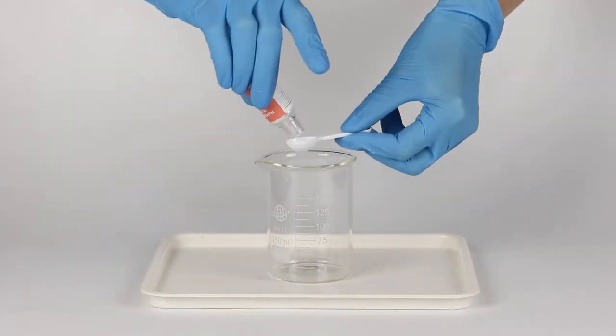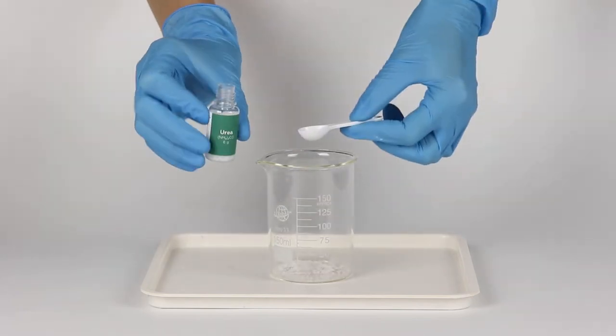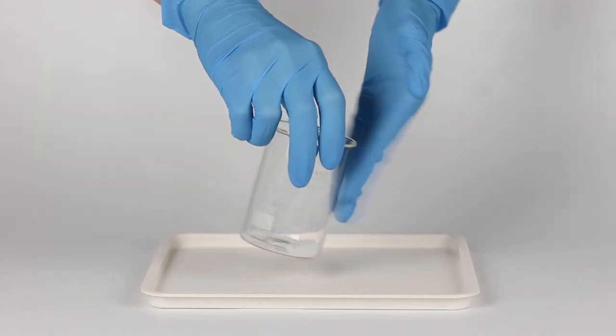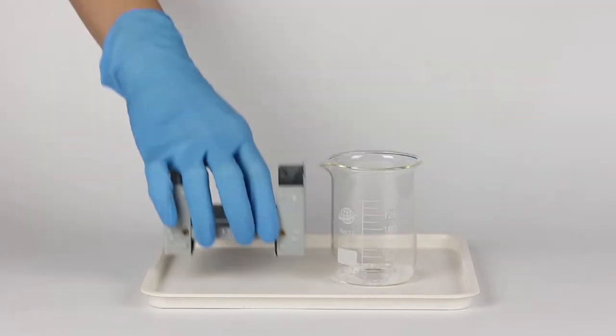Pour one big measuring spoon of sodium hydrogen sulfate and one big spoon of urea into the beaker. Tilt the beaker to move the mixture to the corner. Put three candles into the stove.